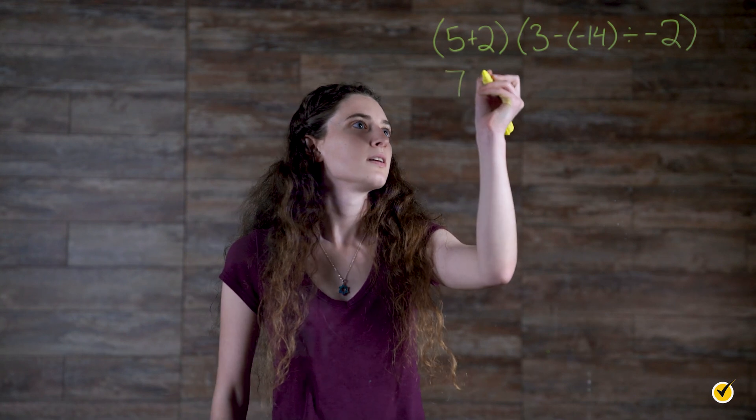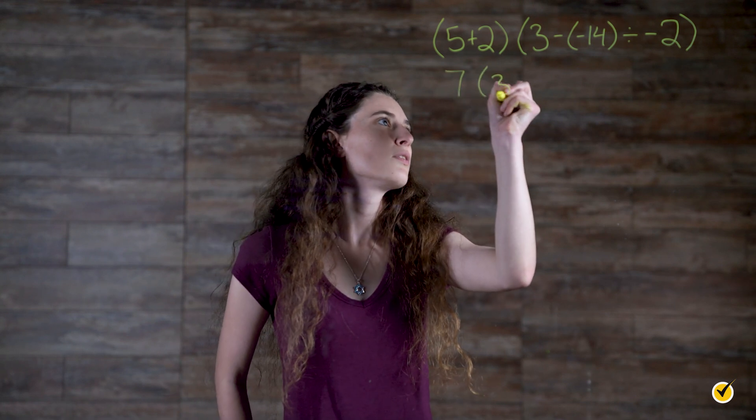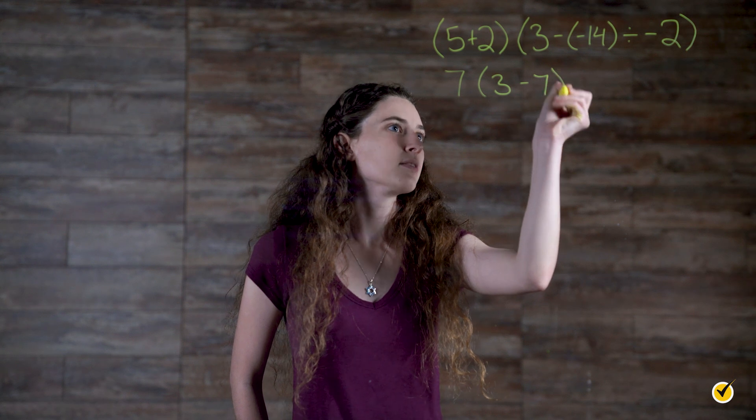The first set of parentheses simplifies to 7, but be careful on the second set. There is both subtraction and division within the parentheses, and PEMDAS dictates that division takes precedence over subtraction. So perform the division of negative 14 divided by negative 2 first for an answer of positive 7. So we have 7 times 3 minus 7.